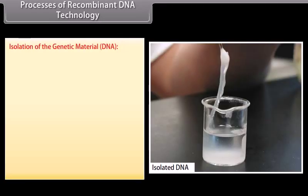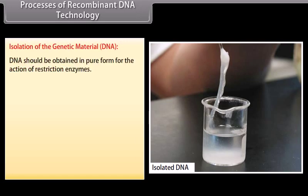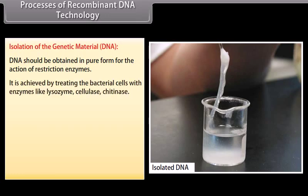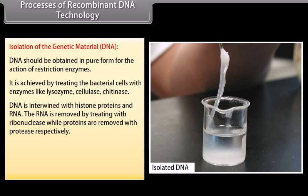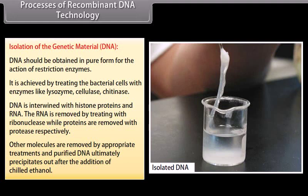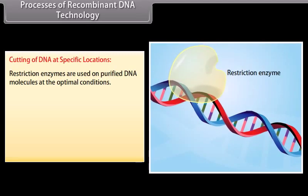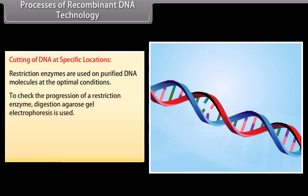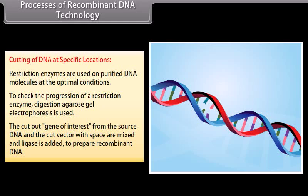Isolation of the genetic material (DNA): DNA should be obtained in pure form for the action of restriction enzymes. It is achieved by treating the bacterial cells with enzymes like lysozyme, cellulase, and chitinase. DNA is intertwined with histone proteins and RNA. The RNA is removed by treating with ribonuclease while proteins are removed with protease. Other molecules are removed by appropriate treatments and purified DNA ultimately precipitates out after the addition of chilled ethanol. Cutting of DNA at specific locations: restriction enzymes are used on purified DNA molecules at optimal conditions. To check the progression of restriction enzyme digestion, agarose gel electrophoresis is used. The cut-out gene of interest from the source DNA and the cut vector with space are mixed and ligase is added to prepare recombinant DNA.